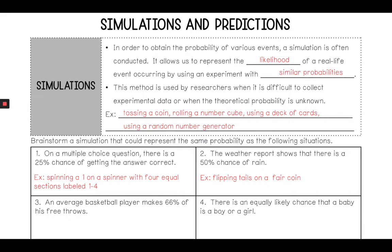Number three: An average basketball player makes 66% of his free throws. So that's two-thirds, 66%. That would be similar to rolling a one, two, three, or four on a number cube, because that would also result in two-thirds of the options being available.